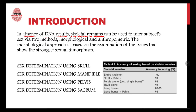Skeletal remains can be used to infer subject sex via two methods: morphological and anthropometric. The morphological approach is based on examination of bones that show the strongest sexual dimorphism — bones that can easily help us differentiate between a male and a female. The bones mainly used are skull, mandible, pelvis, and sacrum. In this video we are going to discuss sex determination using the skull and mandible.